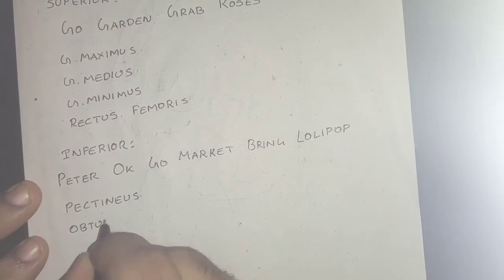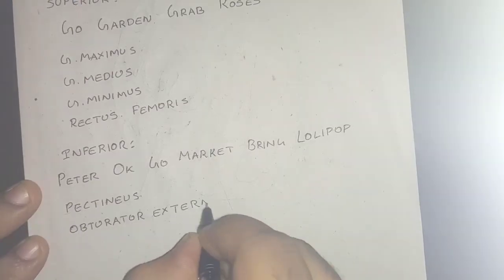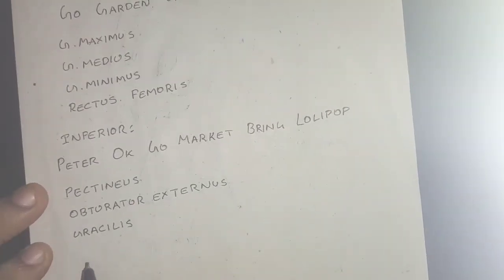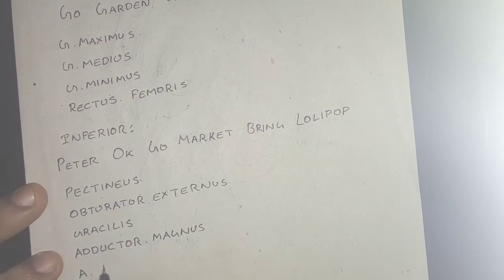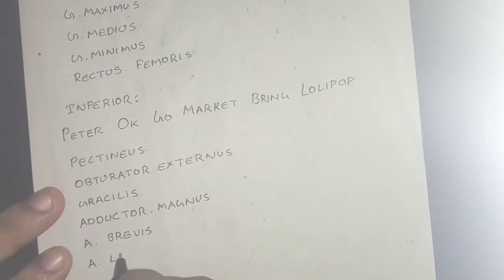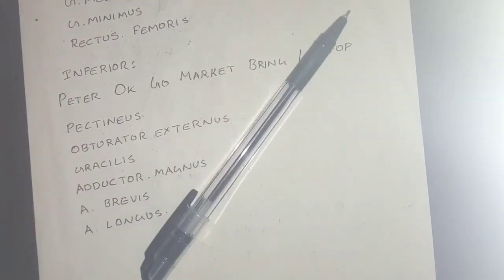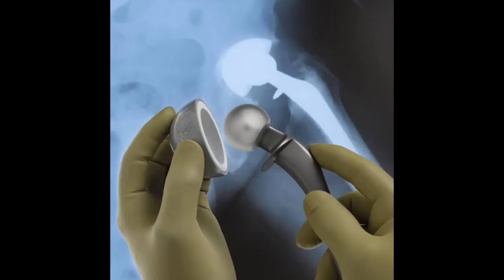For the inferior relation, the mnemonic is 'Peter Okay Go Market Bring Lollipop': pectineus, obturator externus, gracilis, adductor magnus, adductor brevis, and adductor longus. And that's all for the ligaments and relations of the hip joint.